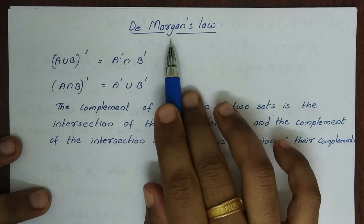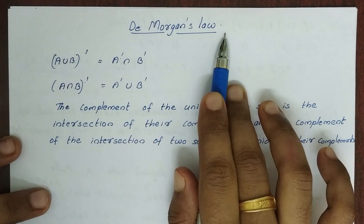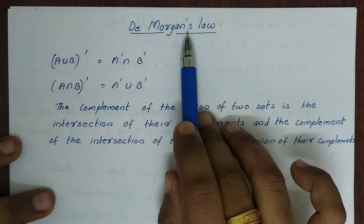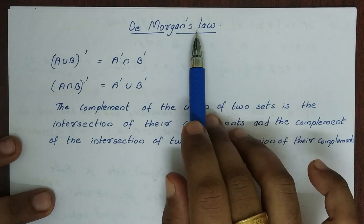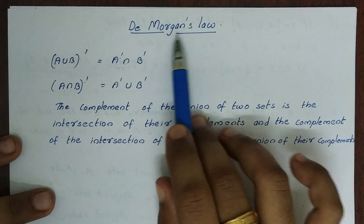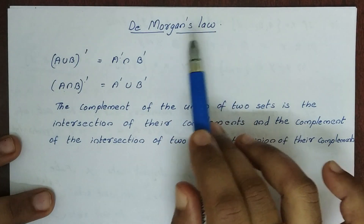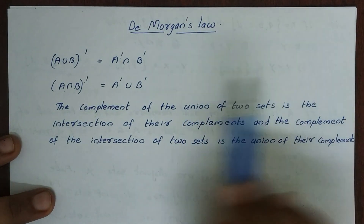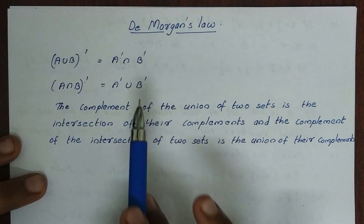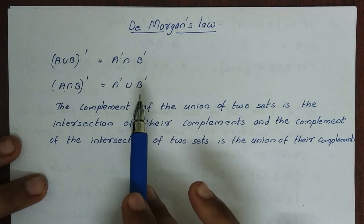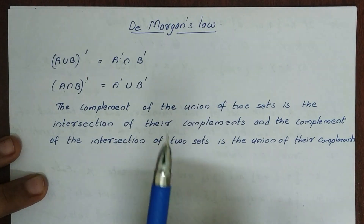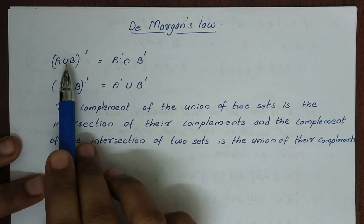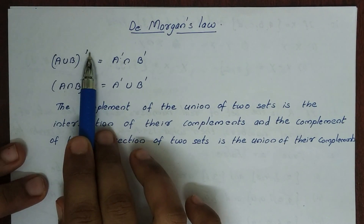Next topic is De Morgan's law. De Morgan's law — De Morgan was a mathematician. This is the complement of a set: the complement of A union B, written as (A∪B) complement.